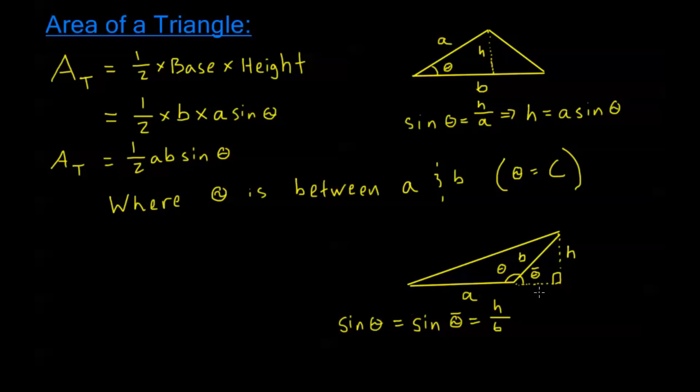But sine of theta bar is the same as sine of theta. Because here we're dealing with thetas and theta bars that are between 0 and 180 degrees. So that means that I'm in either quadrant 1 or 2 in standard position. So sine is going to be positive no matter what this theta and theta bar is in this type of triangle.